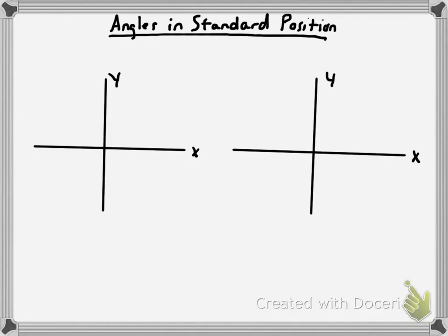An angle in standard position has two sides — what's called an initial side and a terminal side. The initial side of the angle is always the positive x-axis. So that's the initial side of our standard position angle, and then it has a terminal side somewhere else in the coordinate plane.